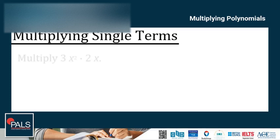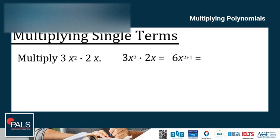For example, multiply 3x squared times 2x. So we multiply the coefficients: 3 times 2 is 6. Then x squared times x — we add the exponents — so we have 6x cubed as the final answer. Remember that if there is no exponent written, the exponent is understood to be 1.